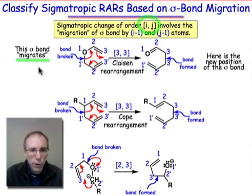In order to identify how far the σ bond migrates, we first need to identify which σ bond is undergoing a migration.